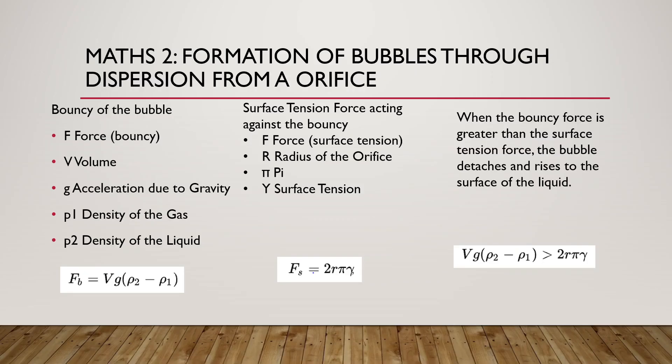One way of generating bubbles is through dispersion from an orifice, so blowing air through a tube. The first thing you have to take into account is the buoyancy of a bubble, which has to be calculated as shown here.